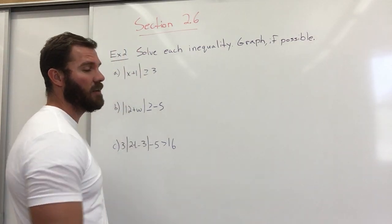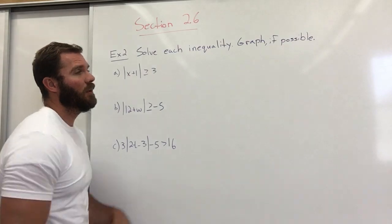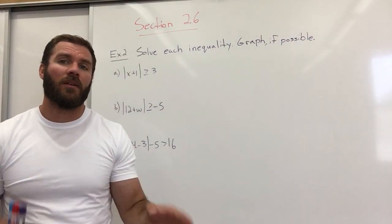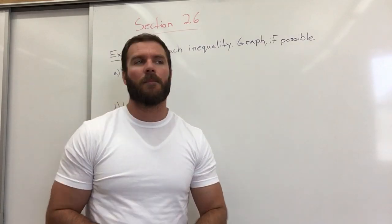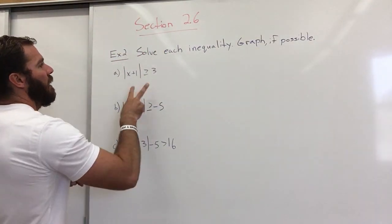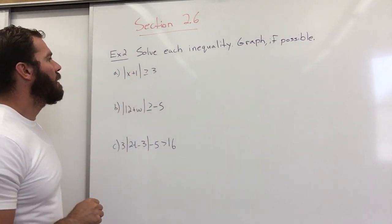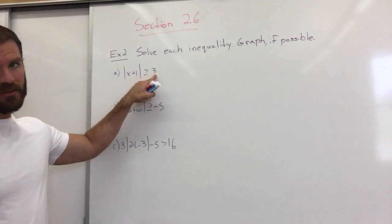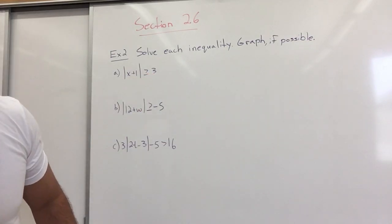Section 2.6, Example 2. We're dealing with inequalities, absolute value inequalities with the word 'or', and we'll show you how to do that. So we have our inequality here with absolute value. We're going to rewrite this into two of them. It says it's greater than C, and if you look at your core concept, when it's greater than C we're using the word 'or'.